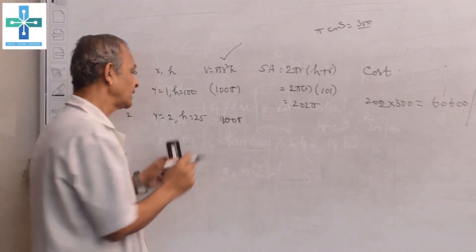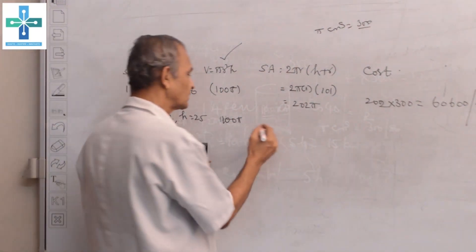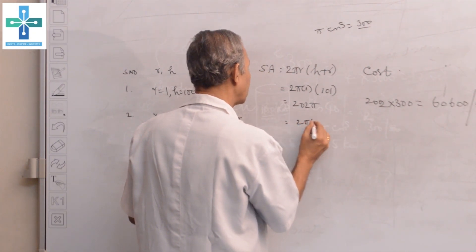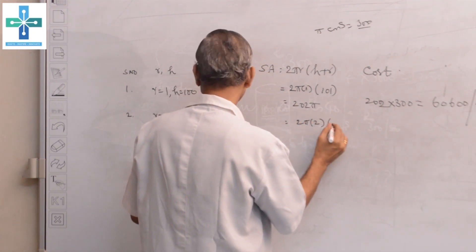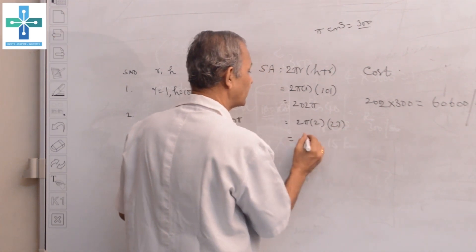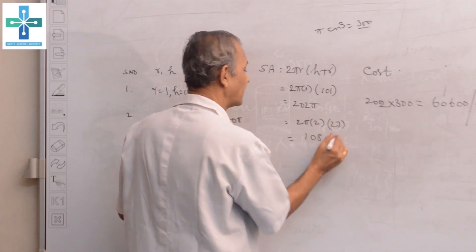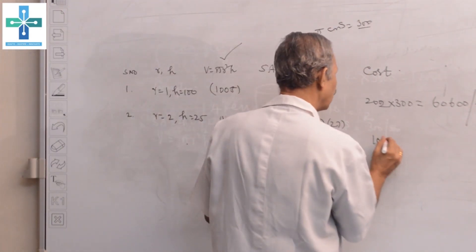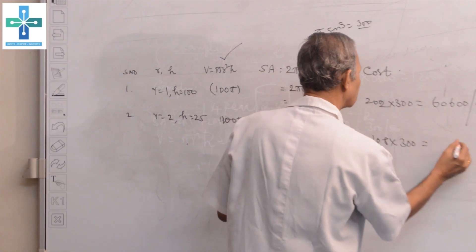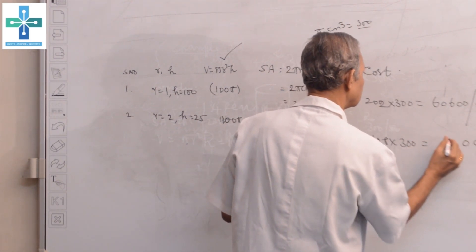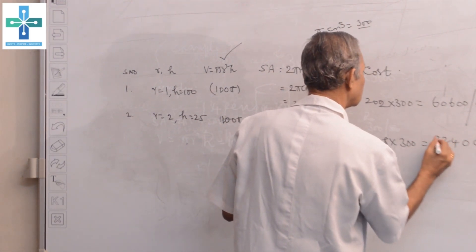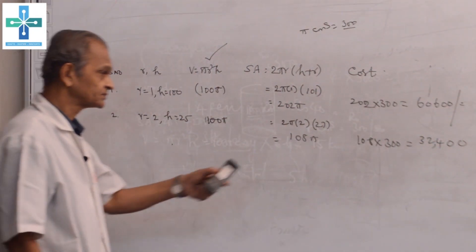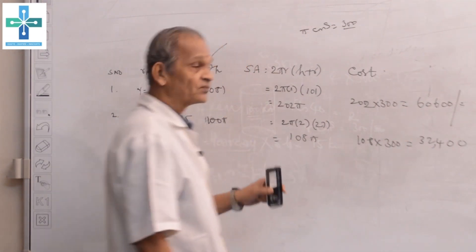The surface area will be 2πr, r is 2, h + r is 27, which equals 108π cubic meters. This 108π times 300 equals 32,400 rupees. The cost of this construction is slowly reduced to some extent.